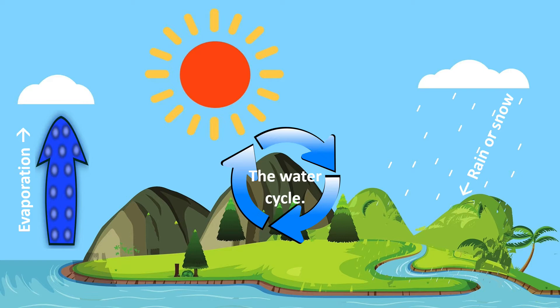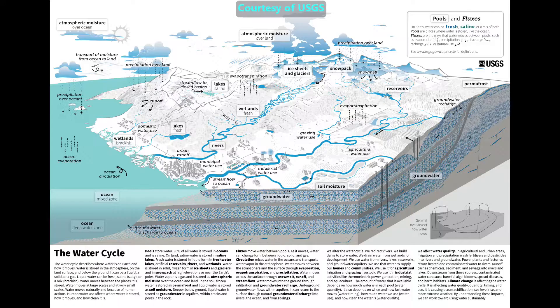When we first hear about the water cycle, we usually see a simplified picture like this, that shows water coming down from the clouds as rain, and then rising from the oceans back to the clouds. But the full details look more like this. Since this is an introductory video, we will focus on just a few definitions and movement types. Let's start with some definitions.